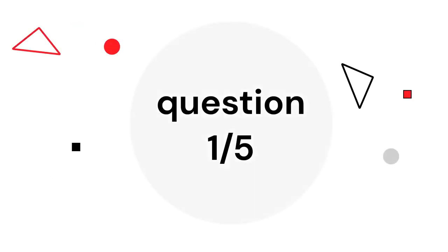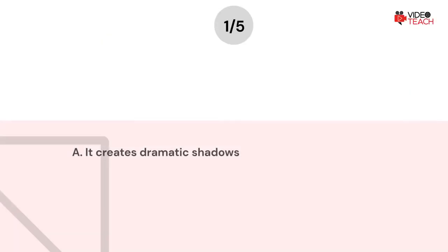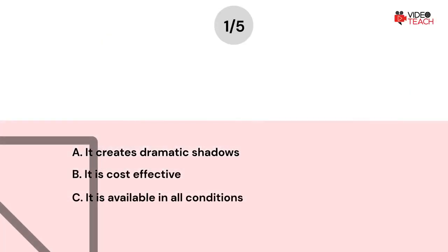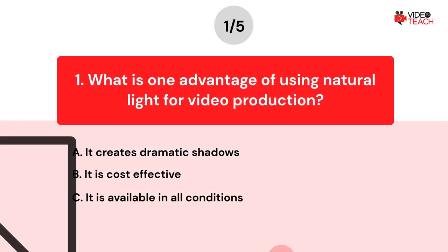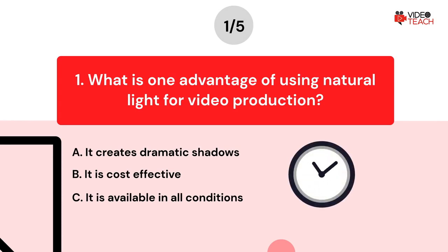Question number one. What is one advantage of using natural light for video production? Option A: It creates dramatic shadows. Option B: It is cost-effective. Option C: It is available in all conditions. Now you have about 15 seconds to think about your answer.